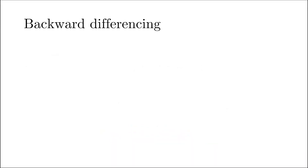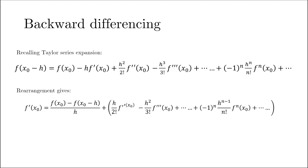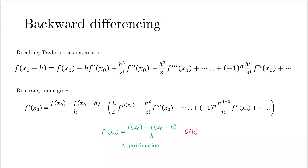In a similar fashion, we can do backward differencing, but this time we need the Taylor series expansion at the point x0 minus h. Using a similar rearrangement, we can again write for the first order derivative. If you observe, the leading order term here also has a multiple of h, and therefore we can write the same order of h. The green part is the backward differencing estimate of the first order derivative, while the red part is again the truncation error of order h.